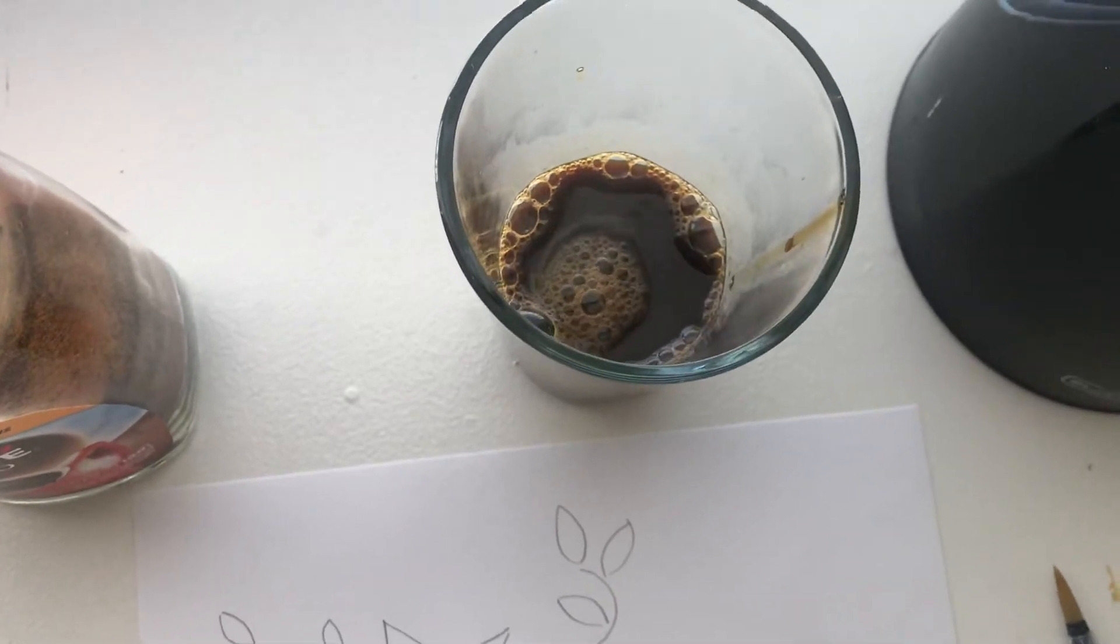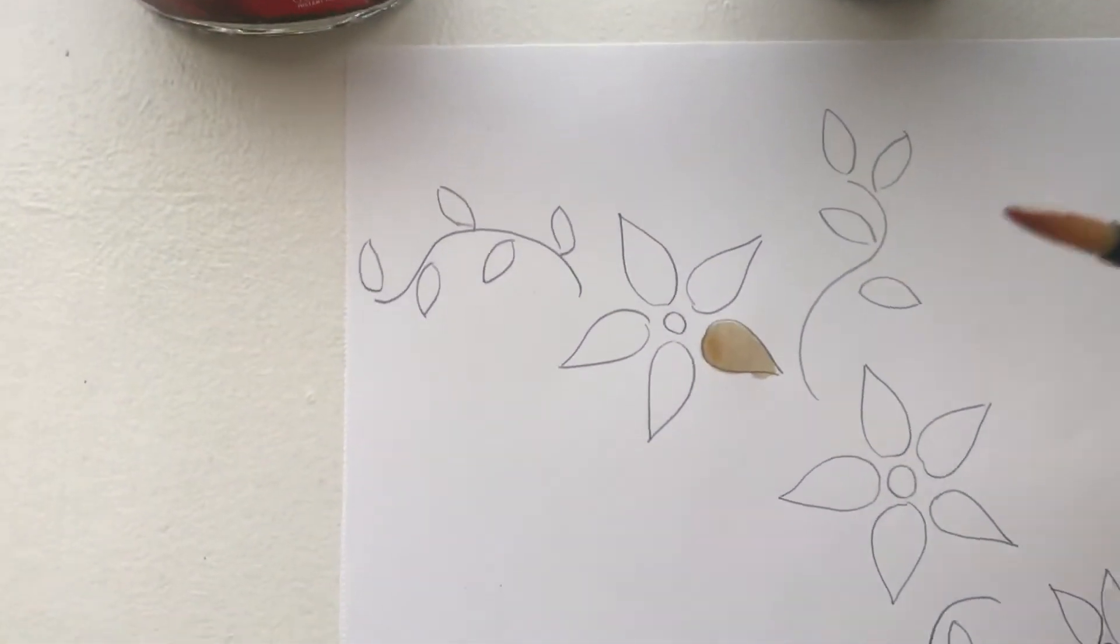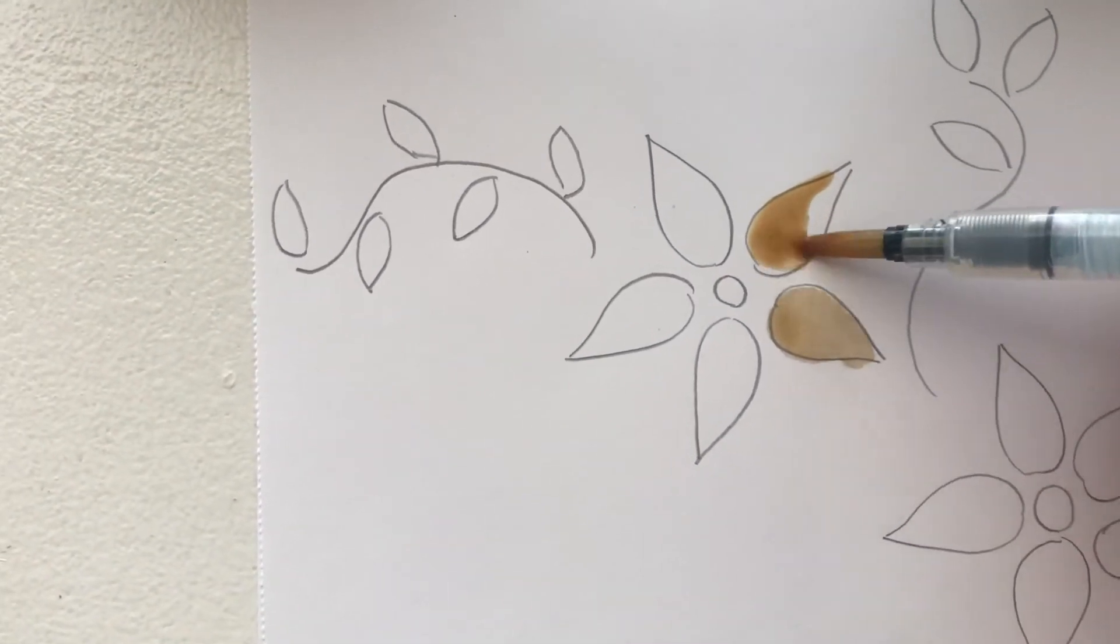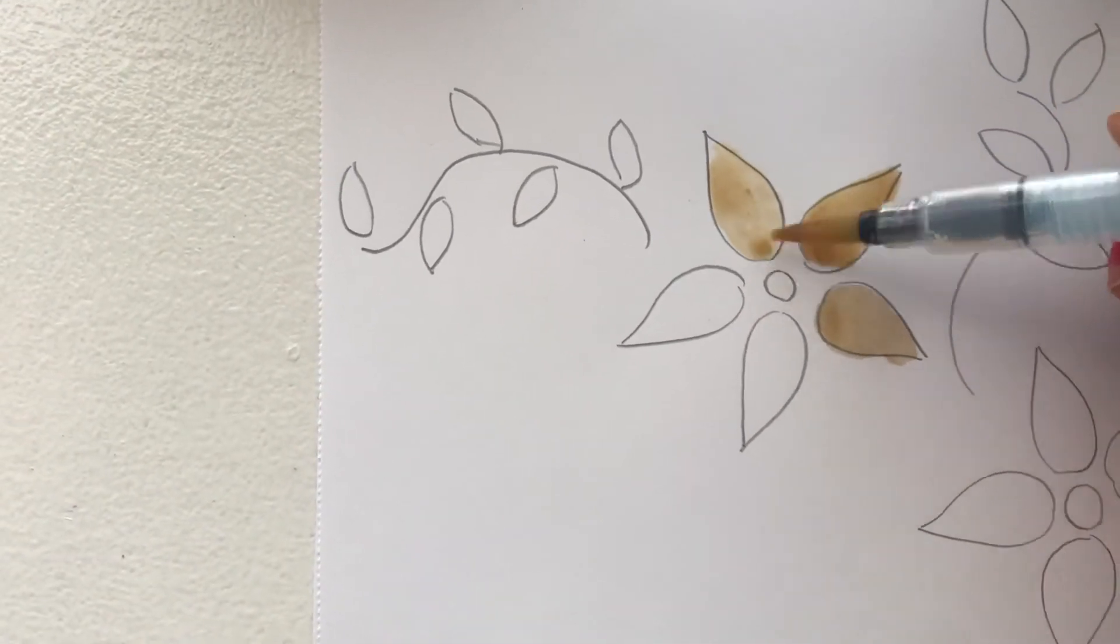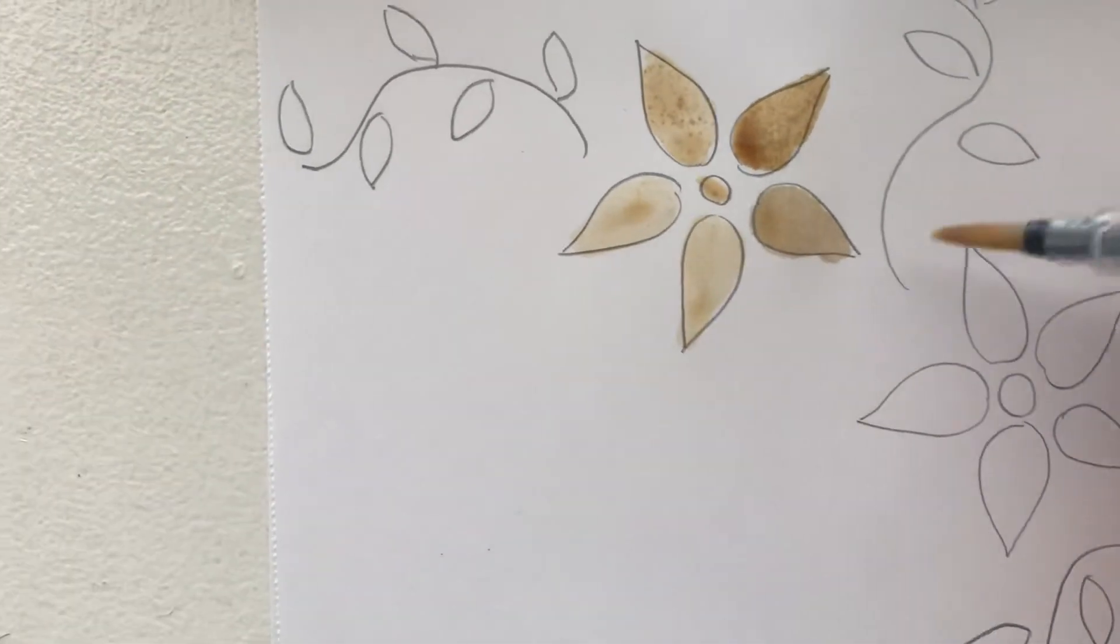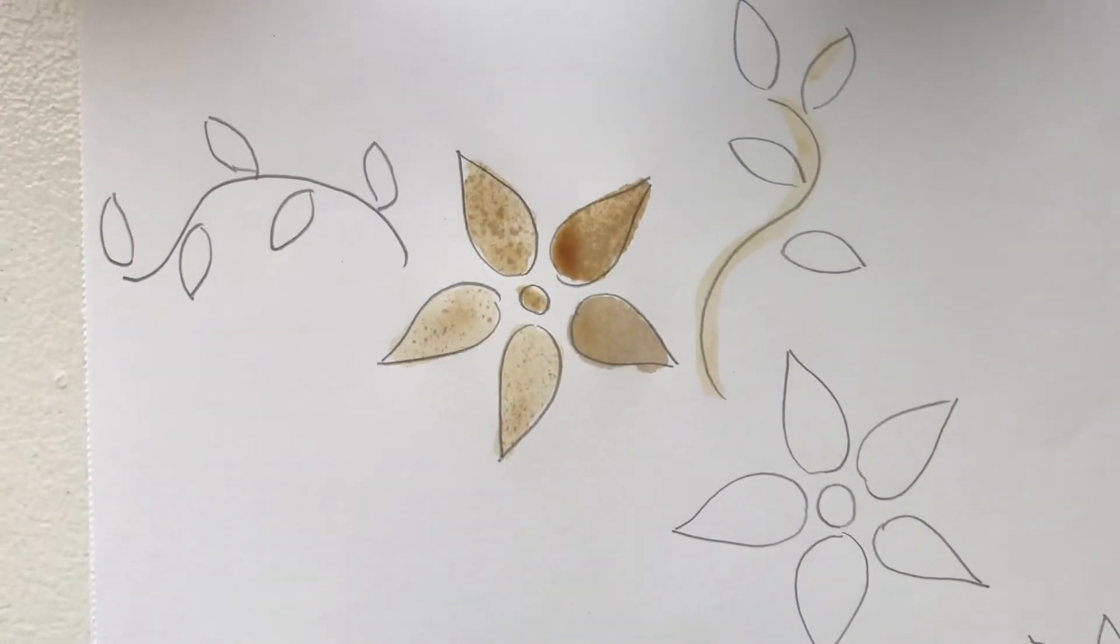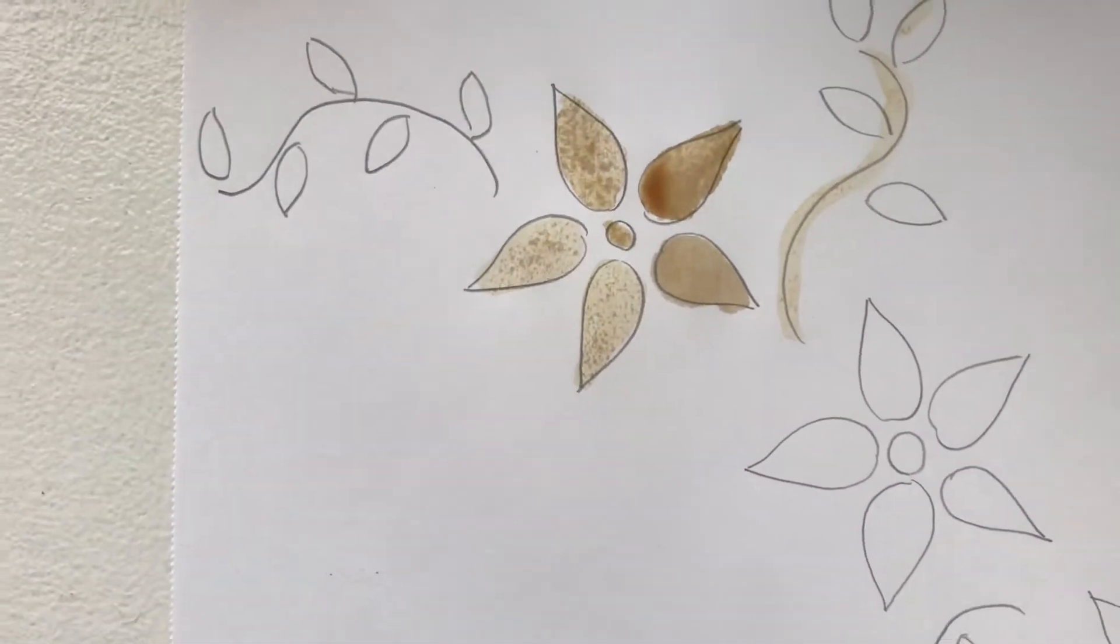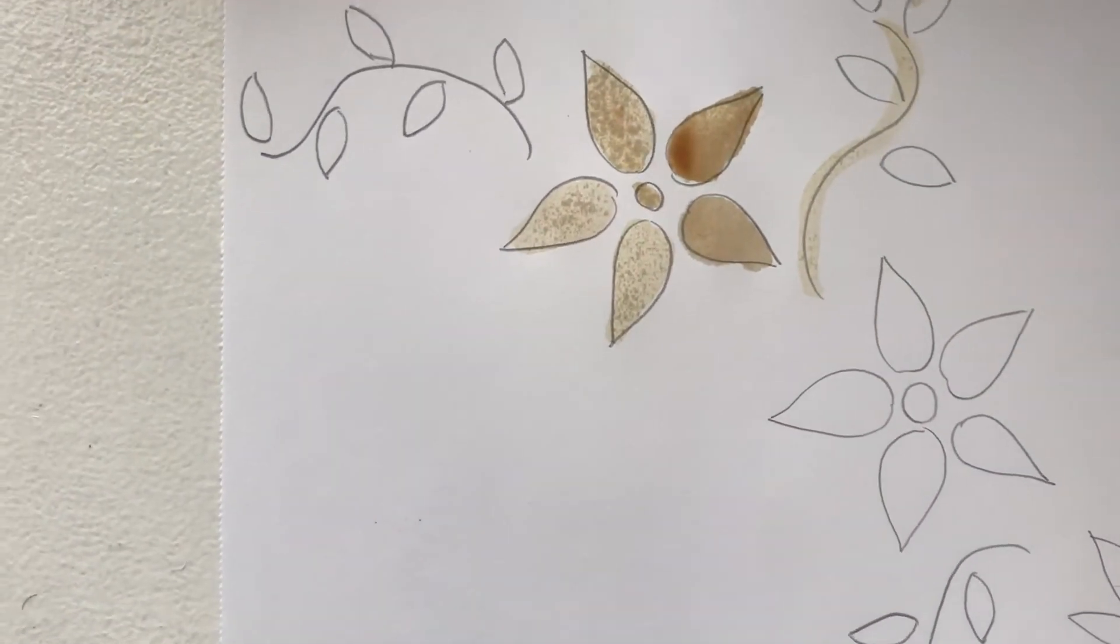So after you mix that up try again and dip your paintbrush in and then you can paint the second petal and see how that comes out even darker. Paint each petal. Some can be lighter, some can be darker. If you drew a picture you can color it in with the shapes like that. Once it dries you can go over the petals that you drew or the shape that you drew again and you can add more color onto it just like you would do with paint.